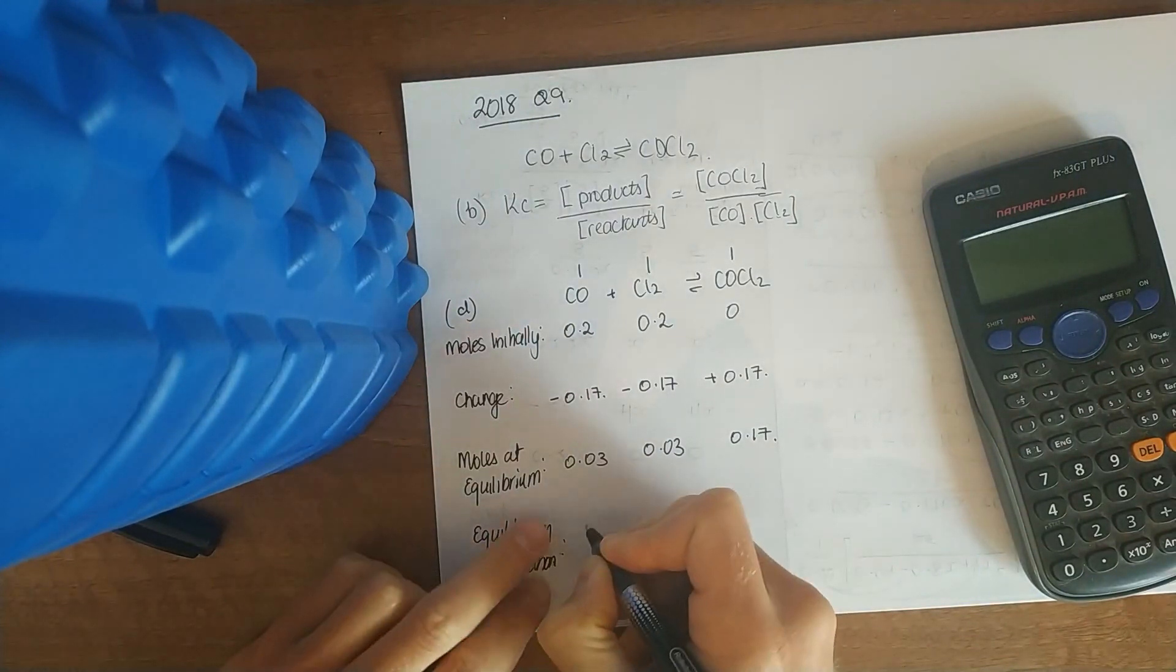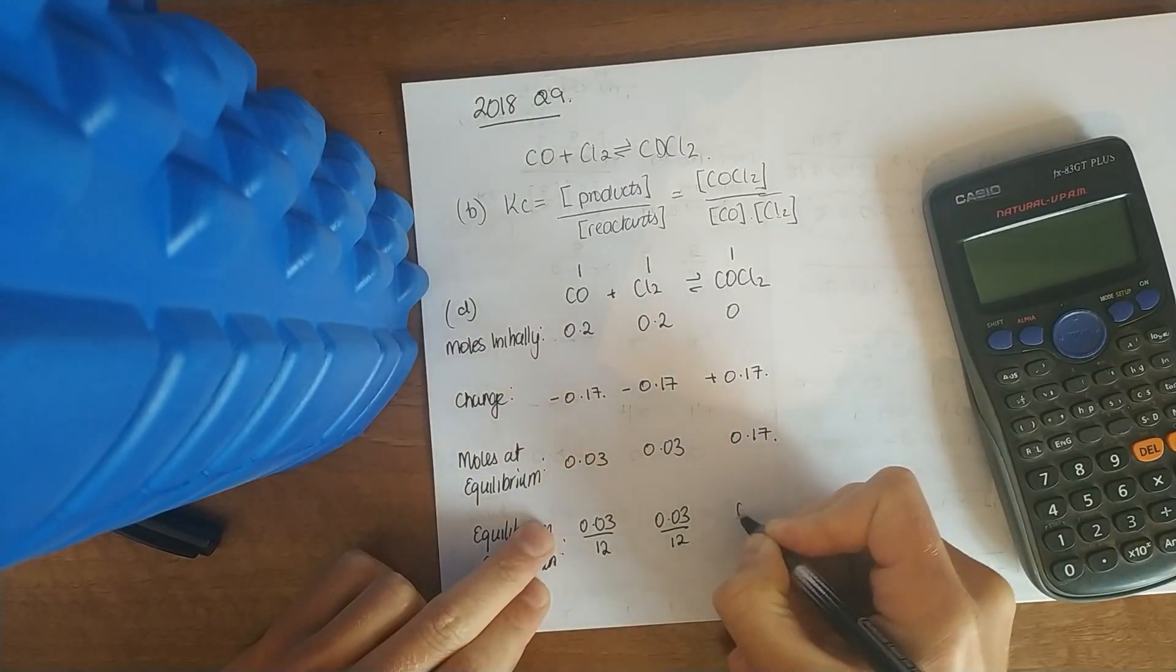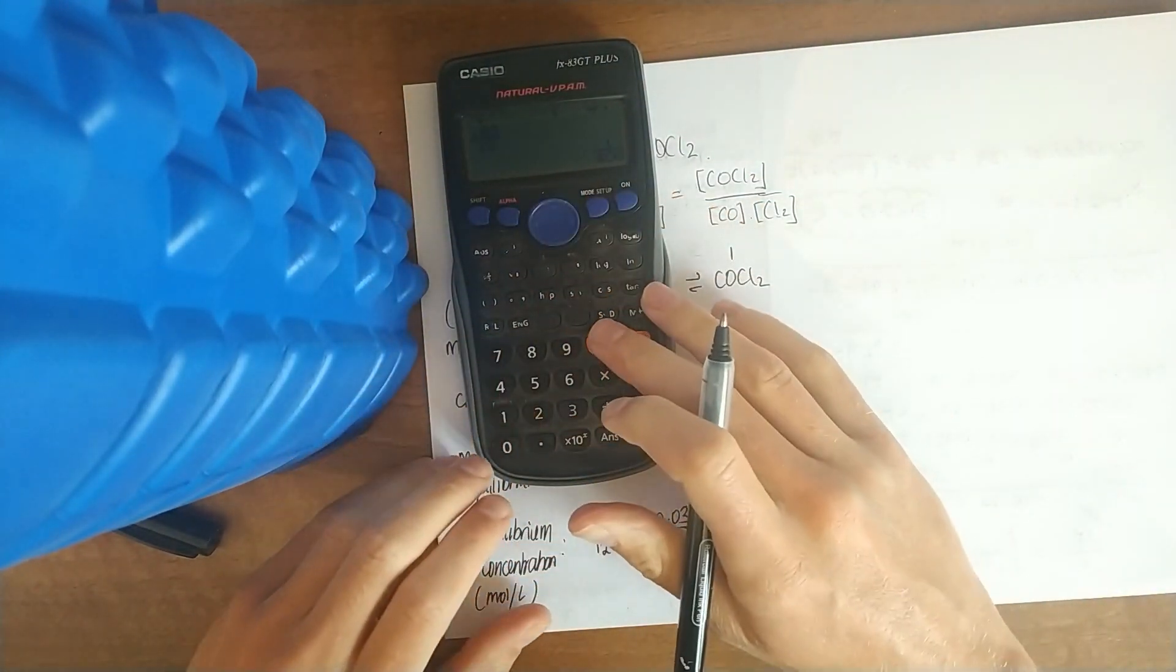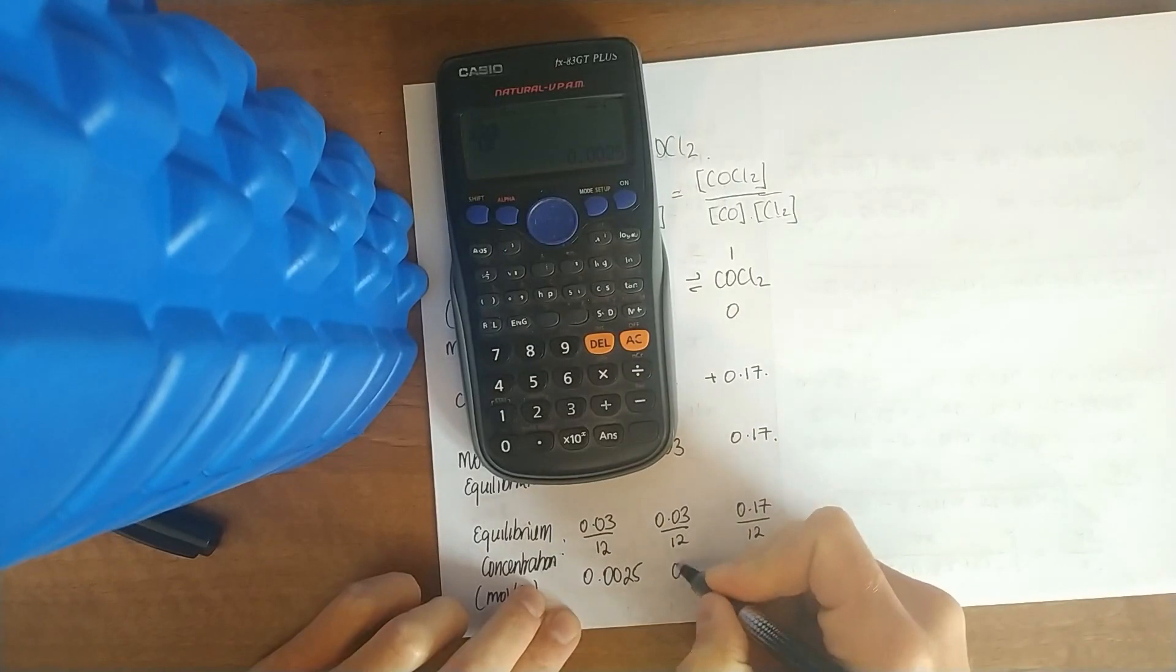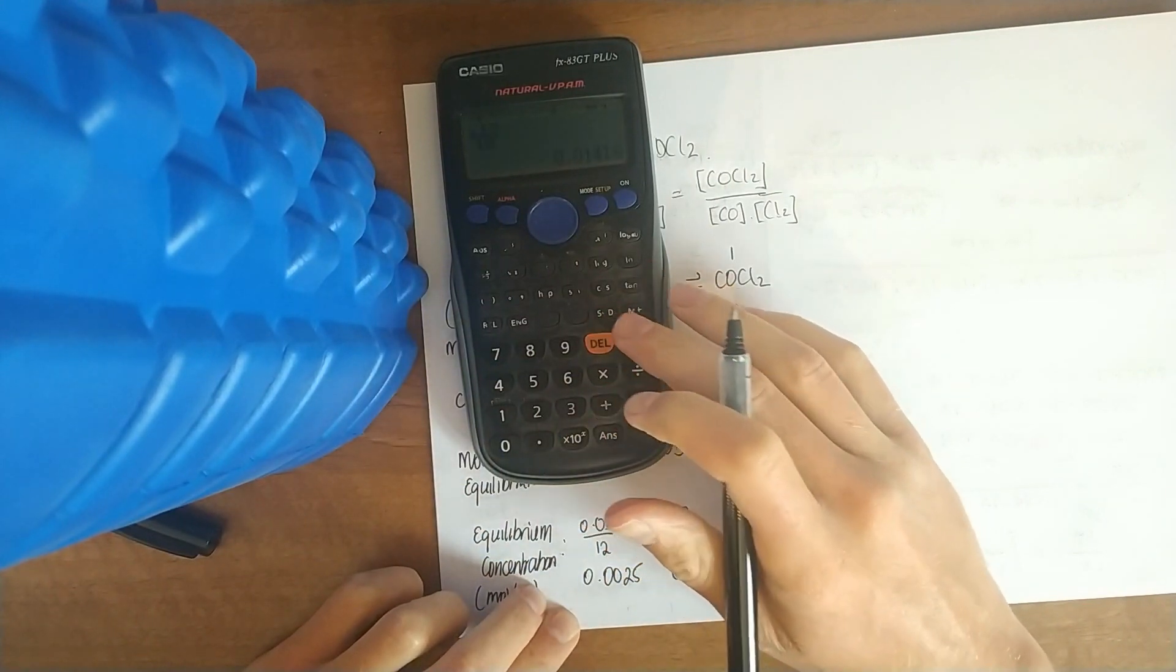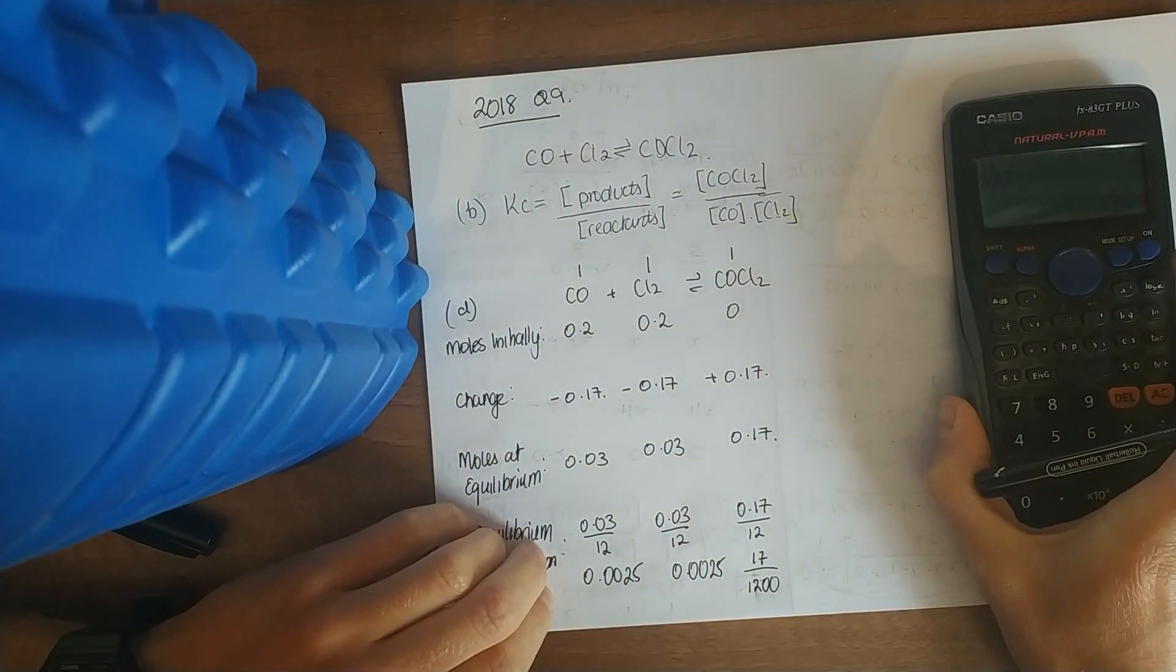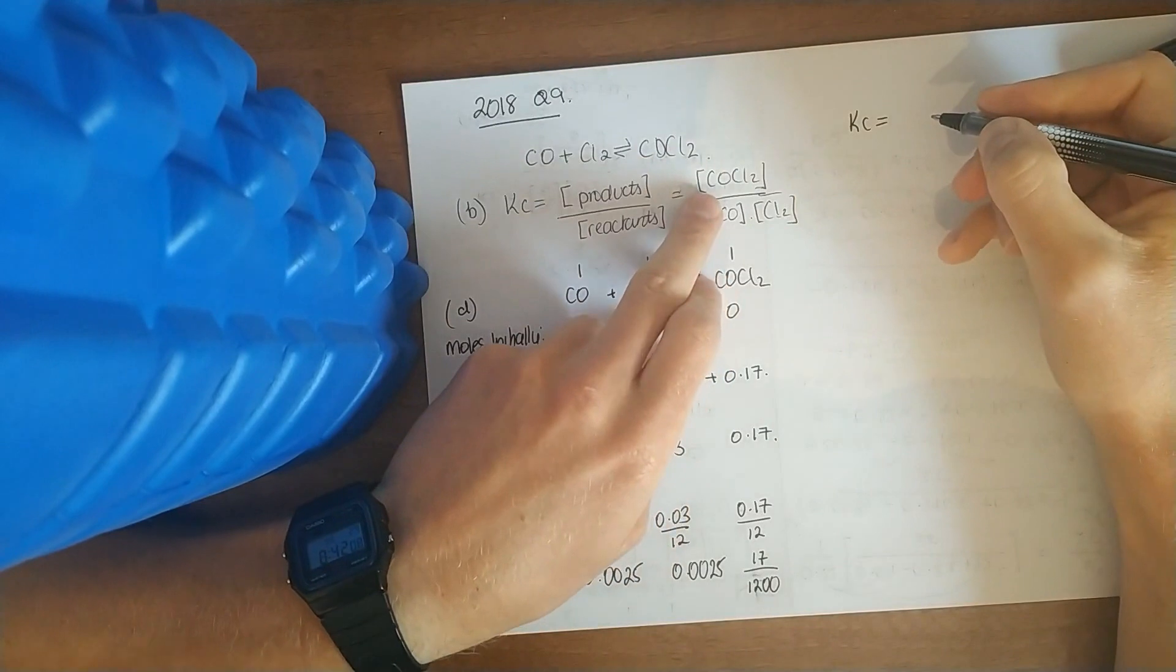Then they give you the size of container, a 12 liter container. So put this over 12. Let's see if that simplifies. Because that looks nice, 3 over 12 is a quarter, 0.0025. It looks a lot nicer. 0.17 over 12, not as nice. I might just keep it as 17 over 1200. But always worth a shot. Calculate the value of KC. Now we just throw in these values up here. So KC, your products over your reactants, your COCl2, 17 over 1200, over these boys here.